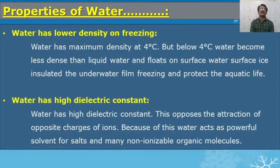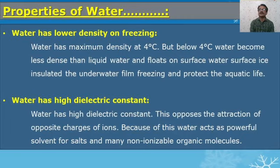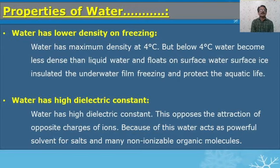Water has lower density on freezing. Water has maximum density at 4 degrees centigrade, but below 4 degrees centigrade water becomes less dense and that ice floats on the surface of liquid water. This property is very essential to protect aquatic life.